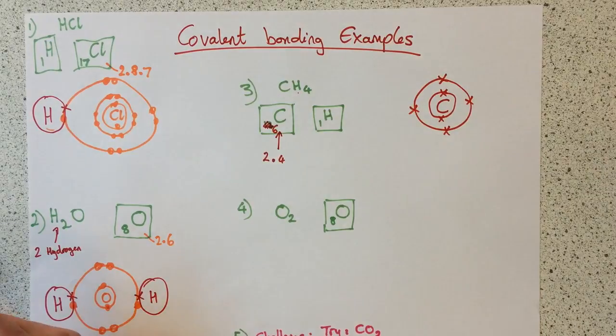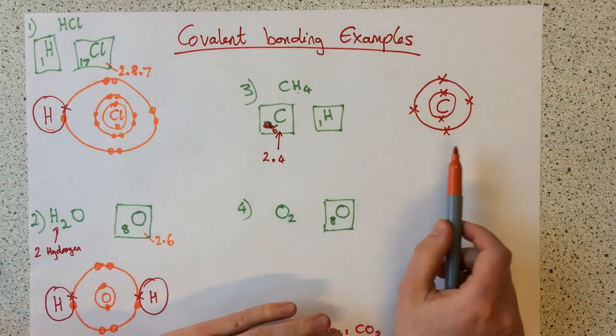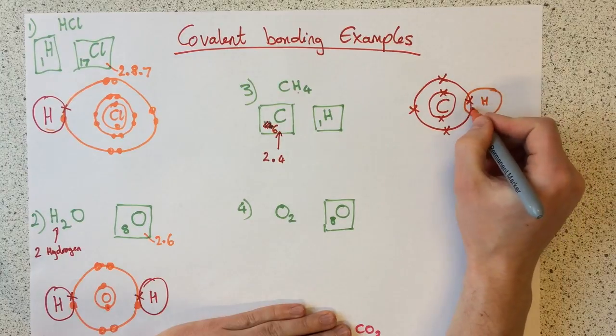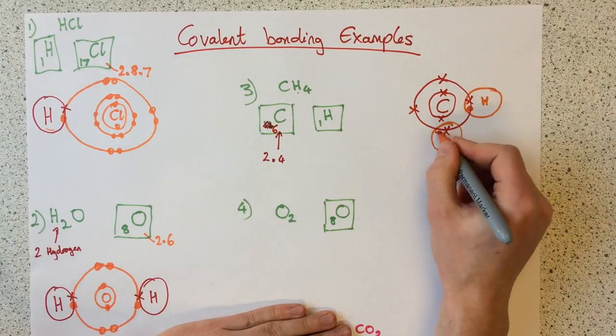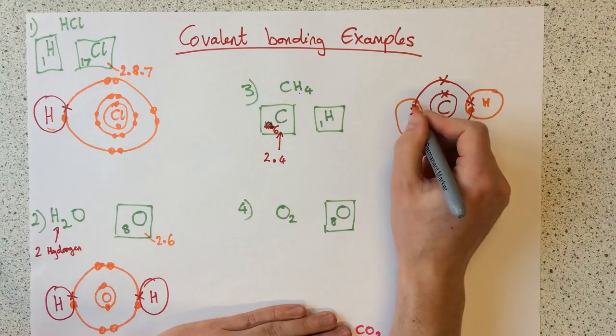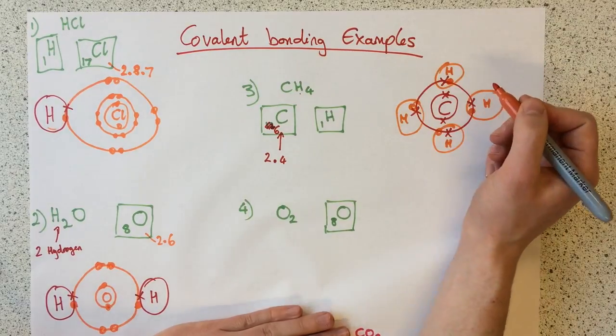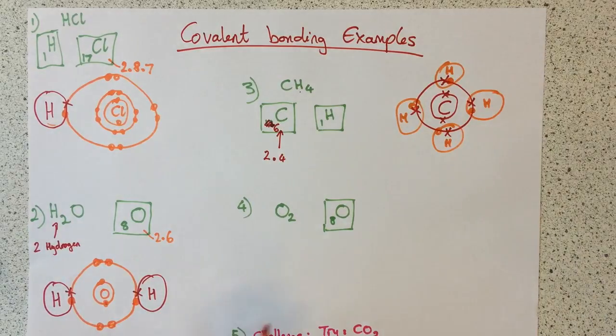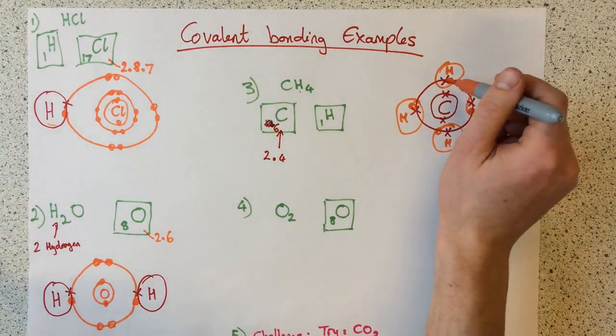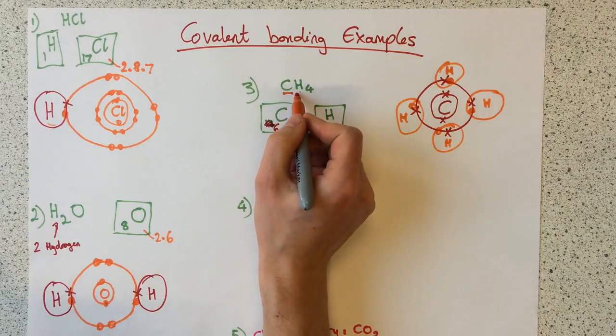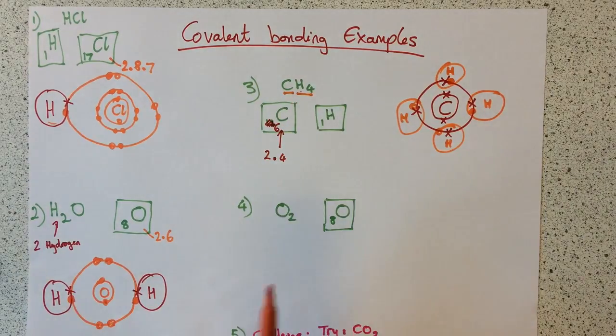We have four hydrogens. So each one of these electrons is going to share with a hydrogen to make the four bonds required. Now carbon's got a full eight, each hydrogen's got two. I've got one carbon and four hydrogens. That's correct.